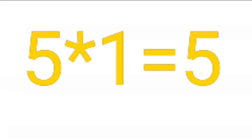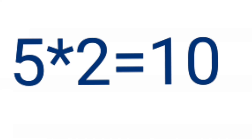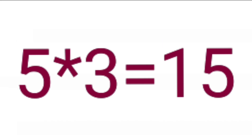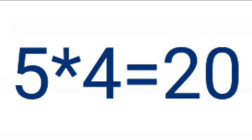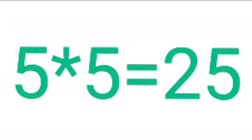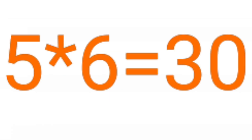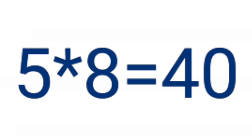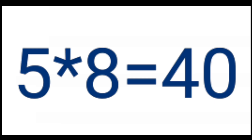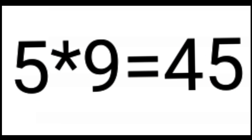Table of 5. 5 1's a 5, 5 2's a 10, 5 3's a 15, 5 4's a 20, 5 5's a 25, 5 6's a 30, 5 7's a 35, 5 8's a 40, 5 9's a 45, 5 10's a 50.